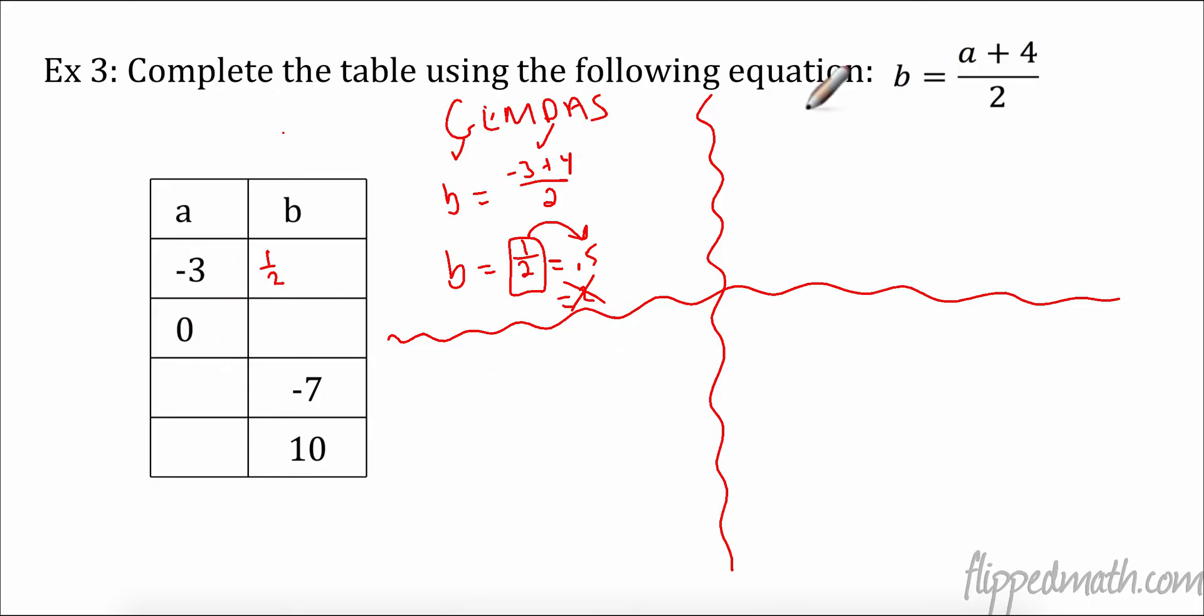Let's do the next one. So B equals my A this time is zero plus four over two. Again, I have grouping. So I have B equals zero plus four is four over two. Now this time I really do need to divide that. Four divided by two is two.